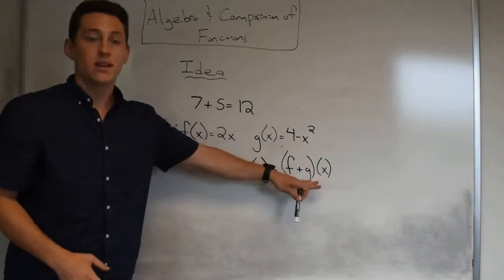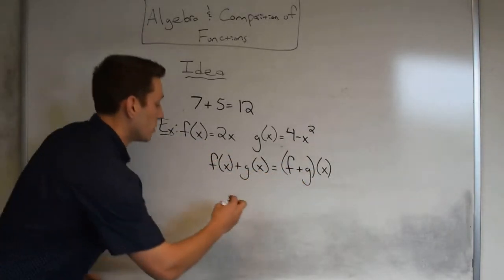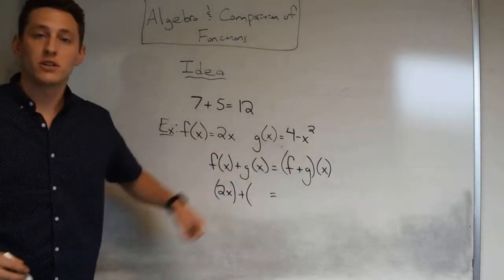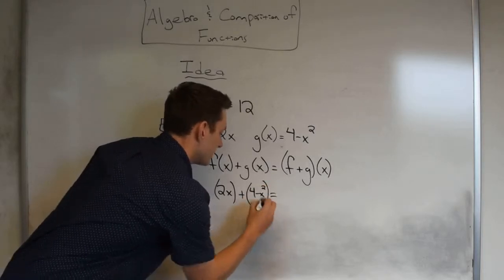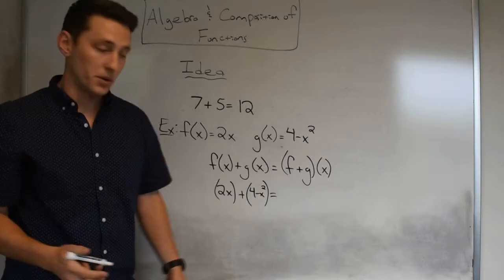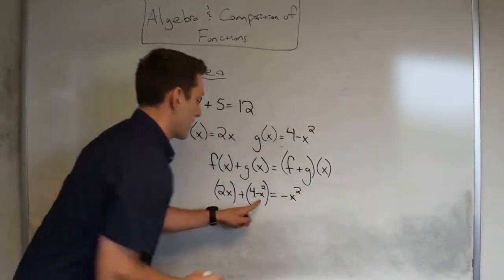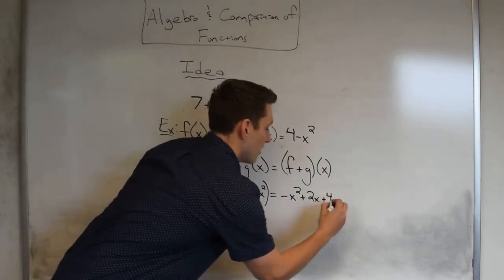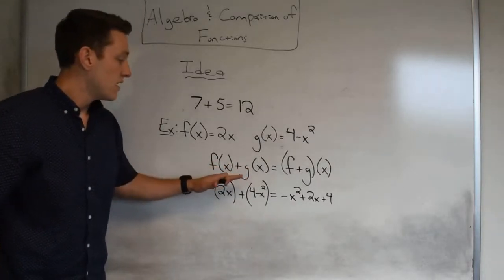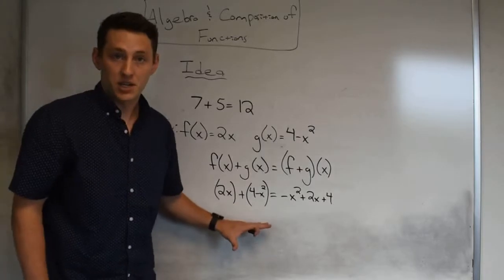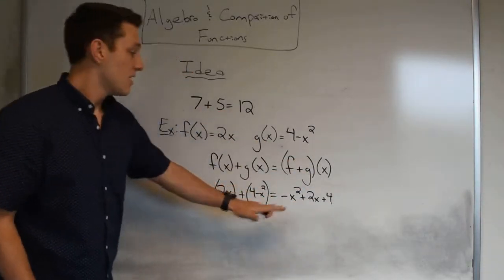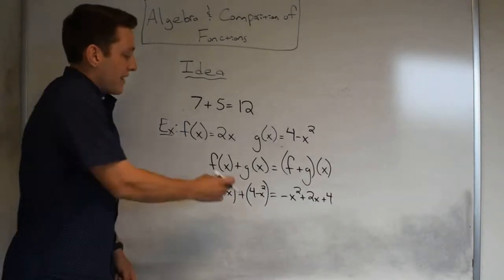Practically speaking, (f + g)(x) means f(x) plus g(x) — the entire first function plus the entire second function. So that's 2x plus (4 minus x squared). Doing some simplification, we get negative x squared plus 2x plus 4. Just like we can do algebra with numbers, we can do algebra with functions — add the outputs of f and g together.